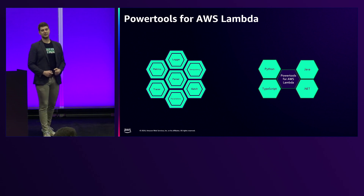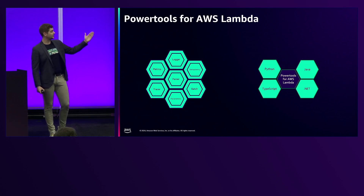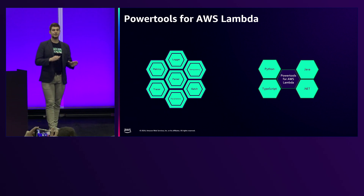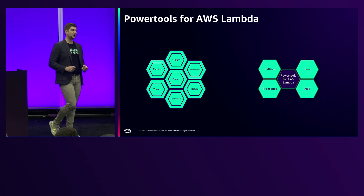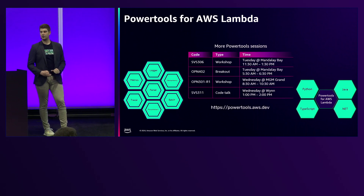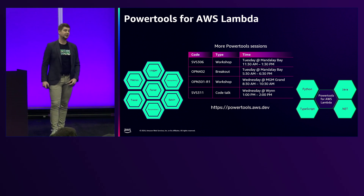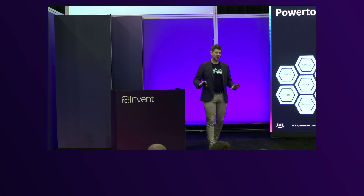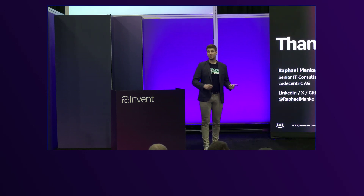All these examples have been written in TypeScript, but Power Tools for AWS Lambda is also available in other languages — Python, Java, and .NET. The capabilities may vary between languages since each is developed independently, but most of what I showed today is available across all these languages. If 20 minutes wasn't enough, there are other sessions throughout the week from the AWS team building the library and community members. Check out the schedule, or head over to powertools.aws.lambda to get started today — they have great documentation. Feel free to connect with me — I'll be at the booth for further questions. Have a great reInvent 2024!